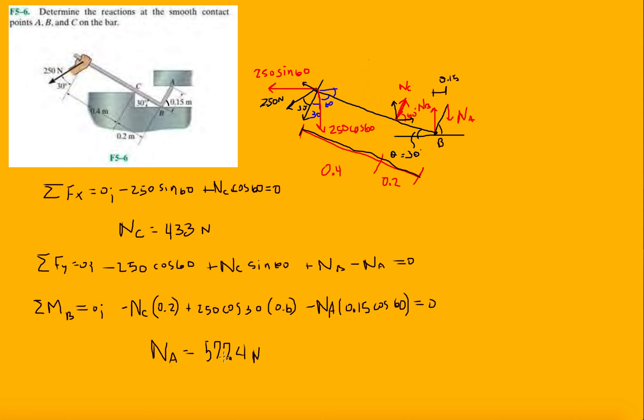So 577.4. So you guys get tripped up with my writing here. Alright, so the last one is N_B, and then that one is pretty easy. So we just got to rearrange this equation here, the middle equation, and that'll tell us that N_B is actually 577.4 plus 250 times cosine 60 and then minus 433 times sine 60. And then we have 327.4 newtons.